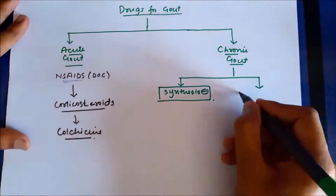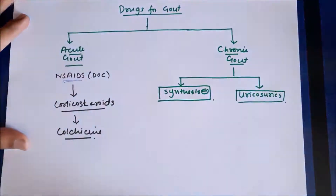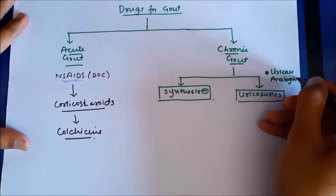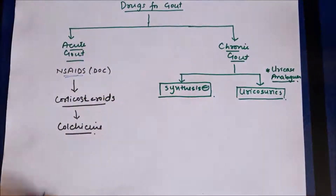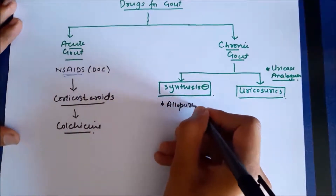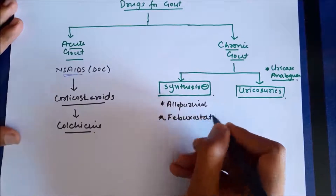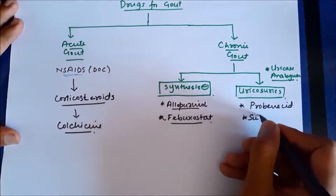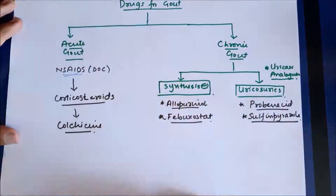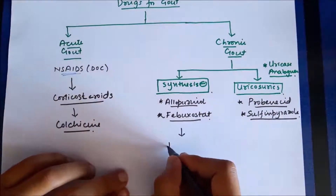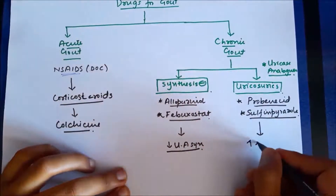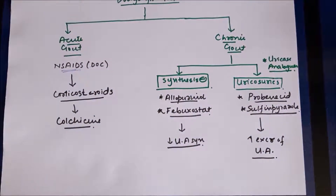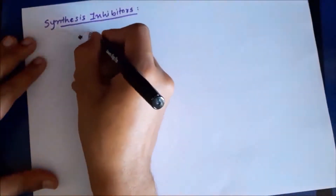The two drug classes for chronic gout are synthesis inhibitors, which inhibit the synthesis of uric acid, and uricosuric agents, which increase the excretion of uric acid. There is also another class called uricase analogs, which will be discussed later. Synthesis inhibitors include drugs such as allopurinol and febuxostat, while uricosuric agents include drugs such as probenecid and sulfinpyrazone.